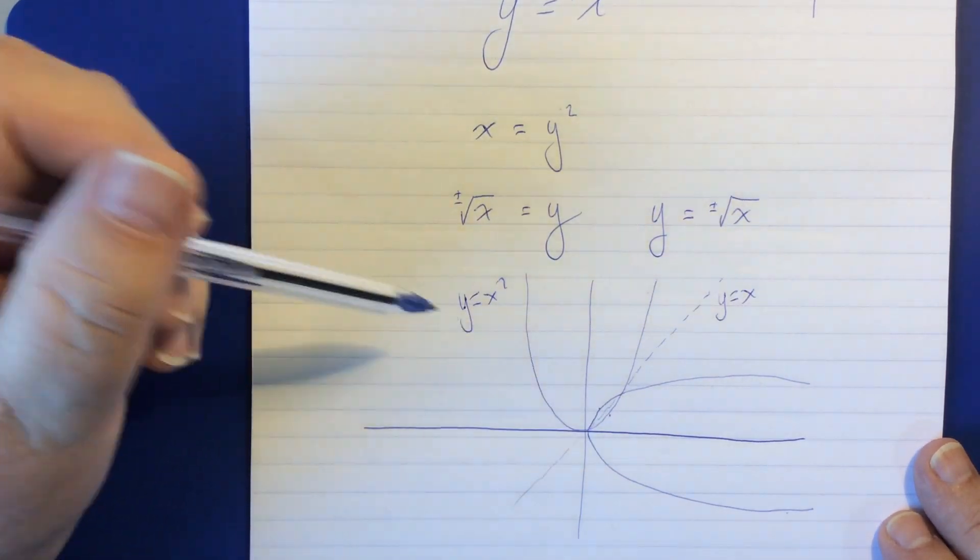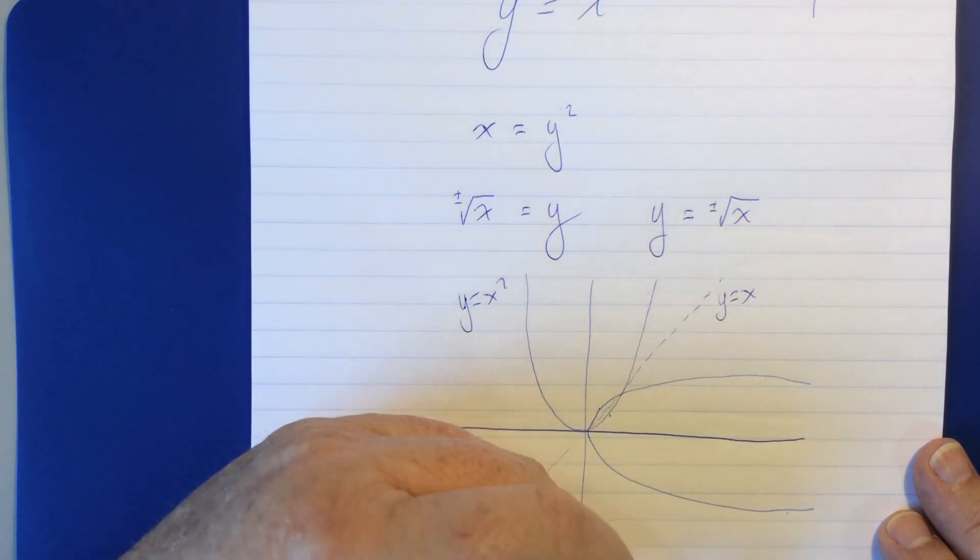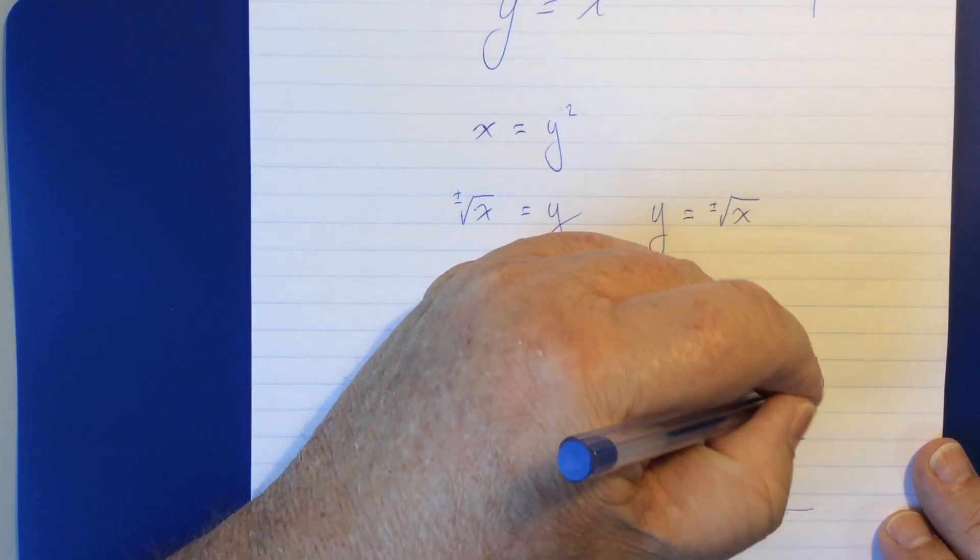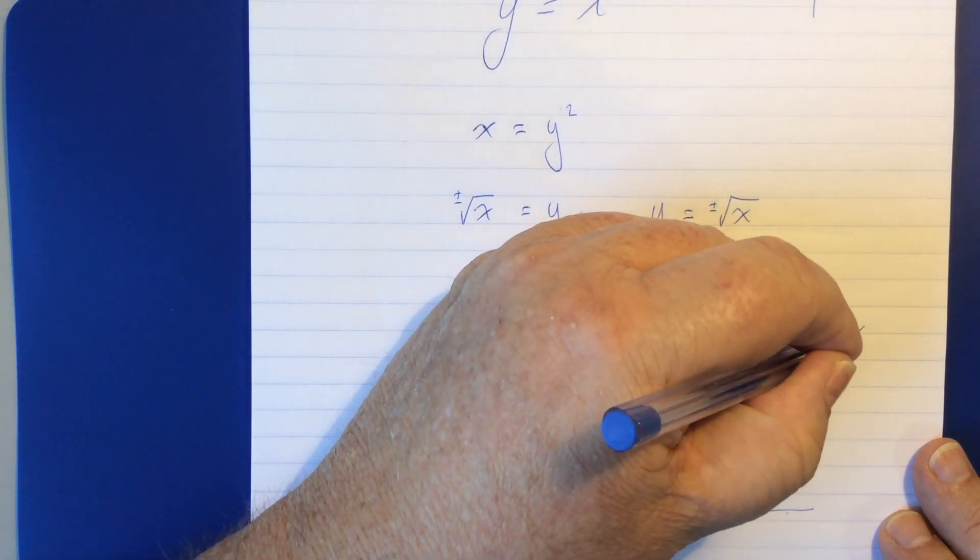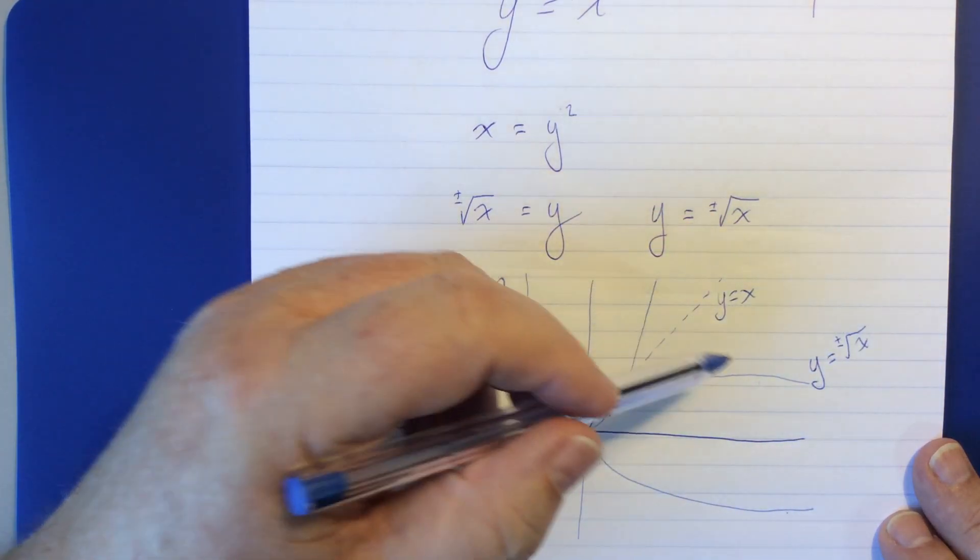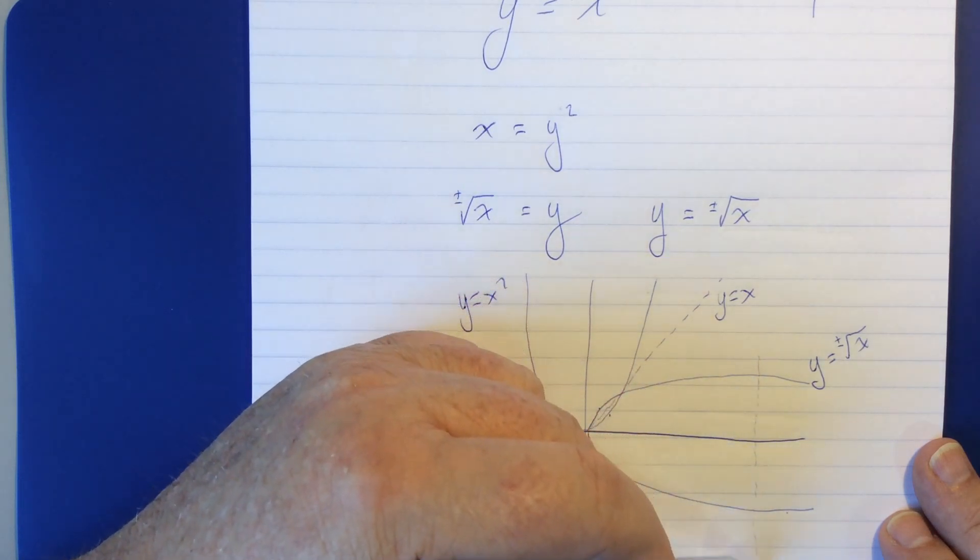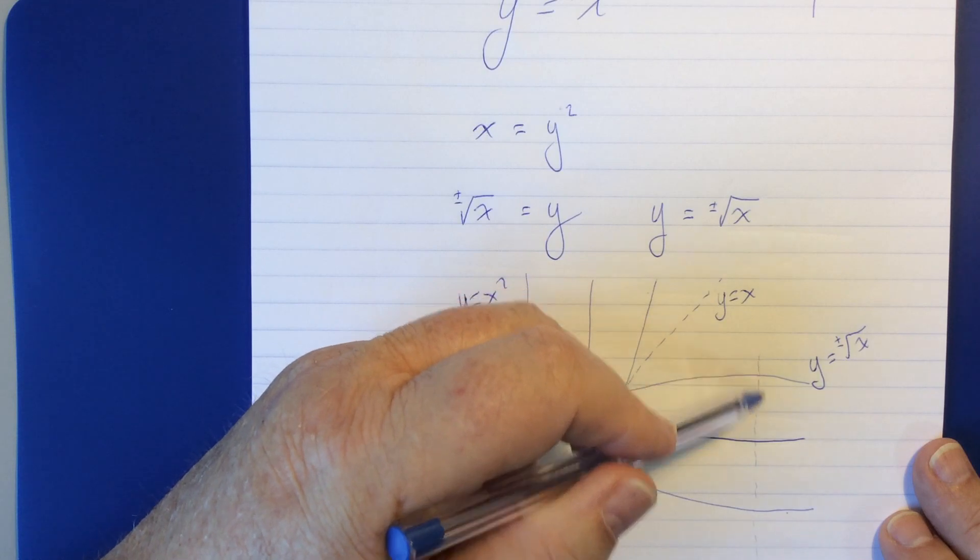Now, there is something else to note about this. In this form, this thing here is not a function. It's what's called a relation.